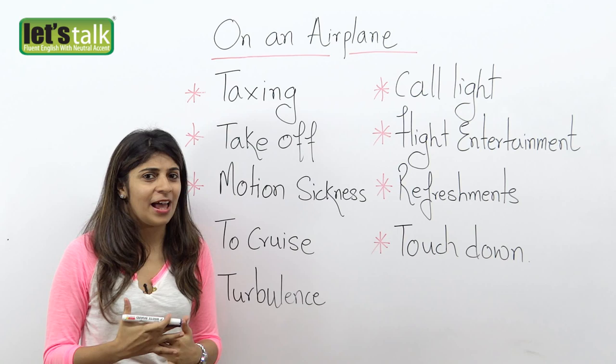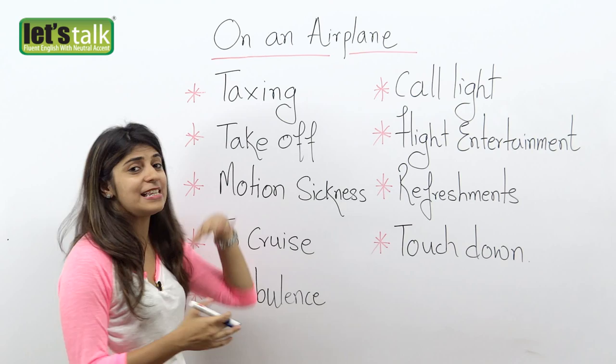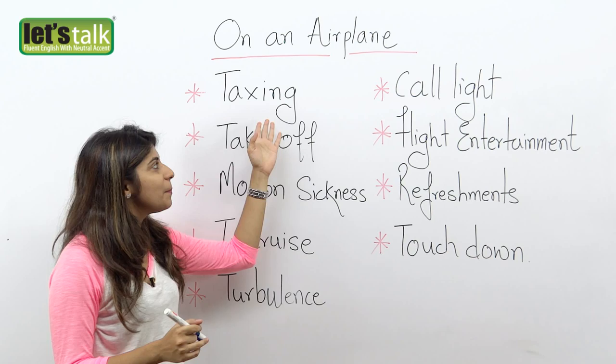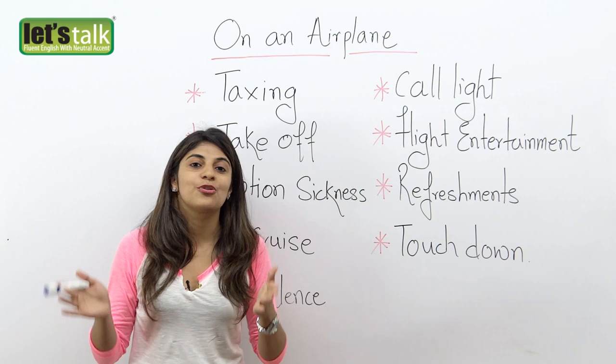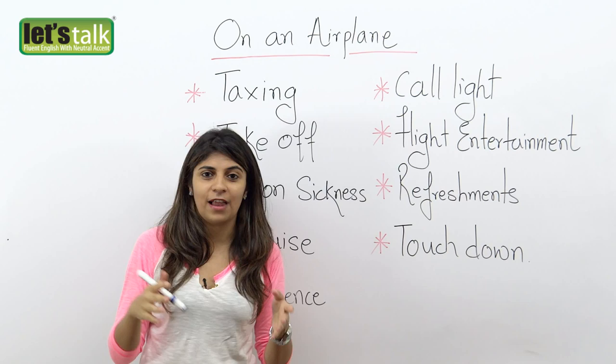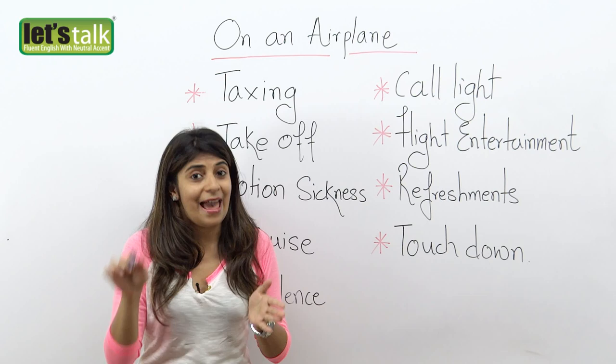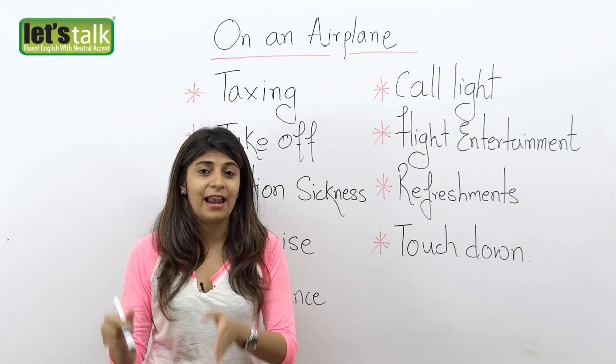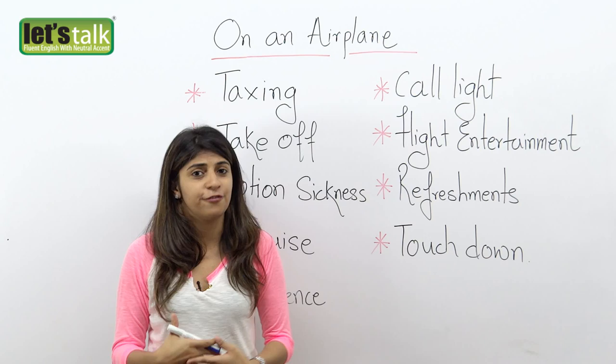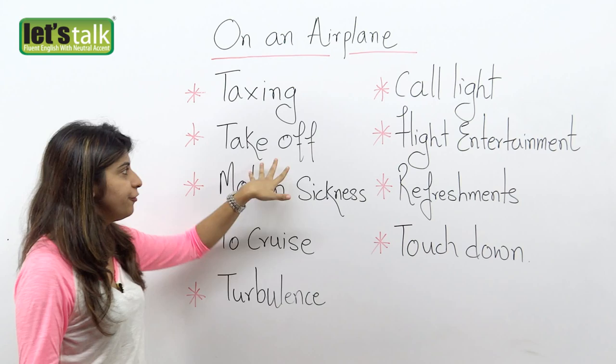We have taxiing. You might have seen on airport screens that a flight is taxiing — this means the aircraft is slowly moving on the ground and going to the right position, especially the runway, to take off. That is taxiing out. Taxiing in is when the flight has landed and moves around the airport on the ground to a position where people can disembark, or deboard the flight.